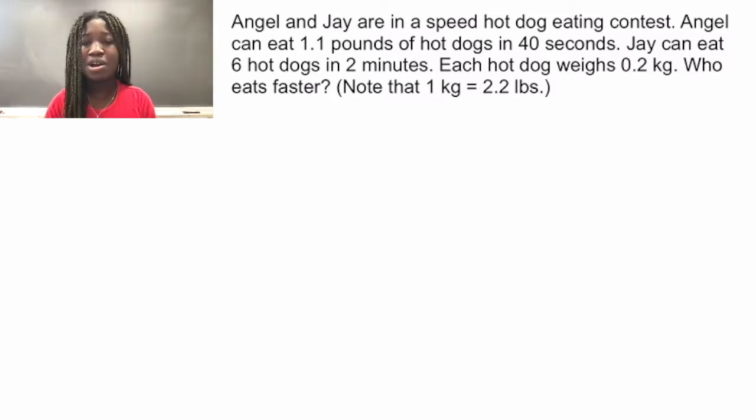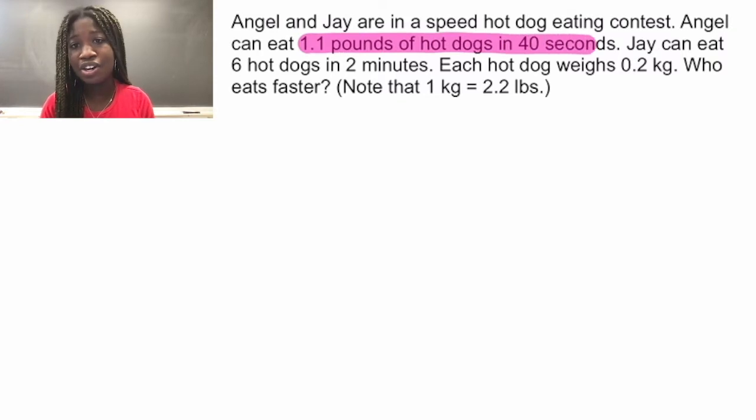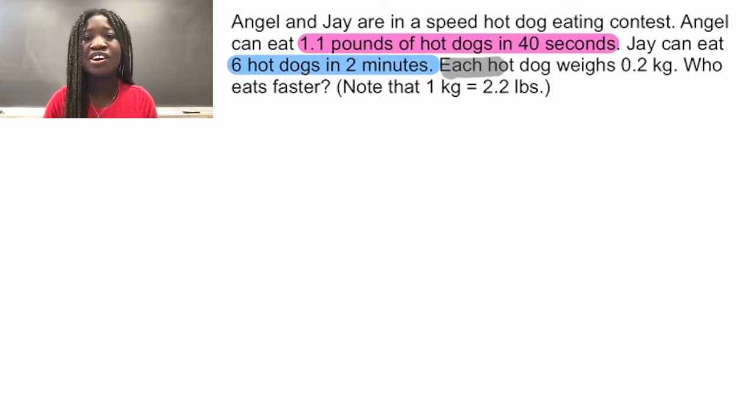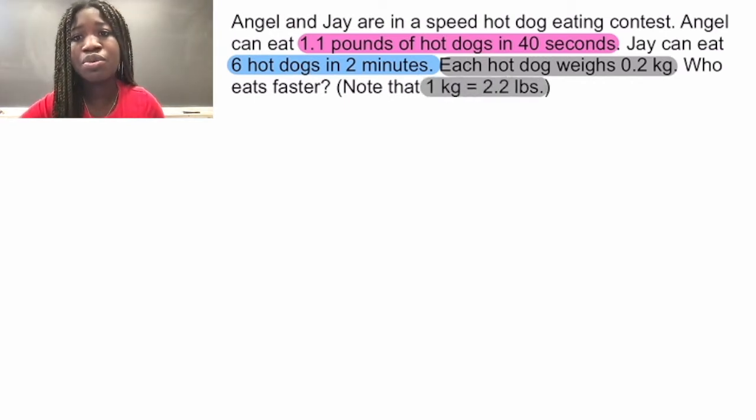Angel and Jay are in a speed hot dog eating contest. Angel can eat 1.1 pounds of hot dogs in 40 seconds. Jay can eat 6 hot dogs in 2 minutes. Each hot dog weighs 0.2 kilograms. Who eats faster? And there's a note that 1 kilogram equals 2.2 pounds.